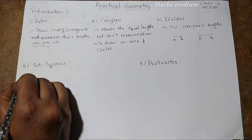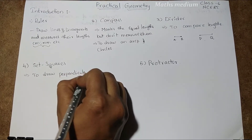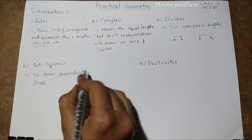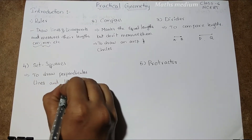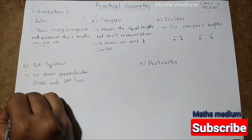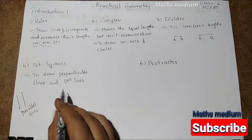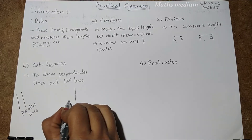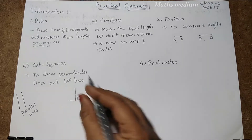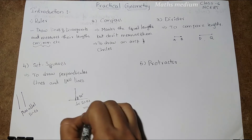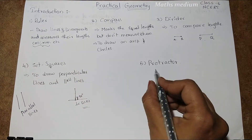Next, coming to the set squares — these are mostly used to draw perpendicular lines and parallel lines. Perpendicular means it creates a right angle at that point. Parallel lines do not touch each other. Perpendicular lines means if one line passes through another line and at that point we get 90 degrees, that is a right angle — these are called perpendicular lines. By using set squares we can draw perpendicular and parallel lines.